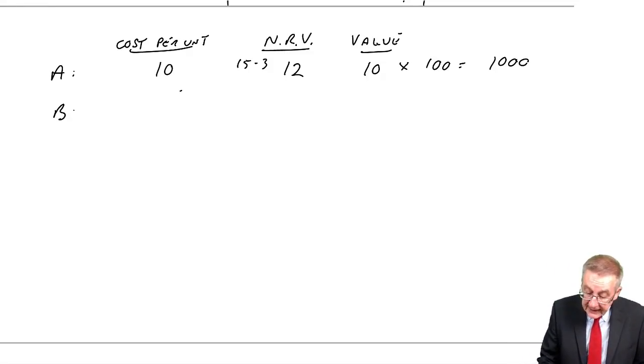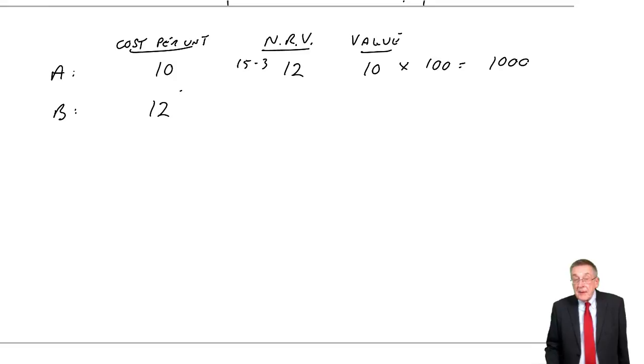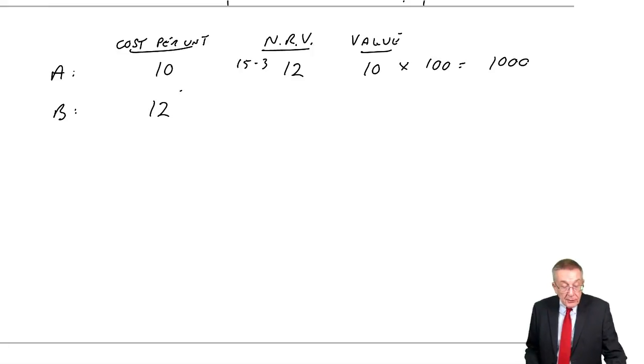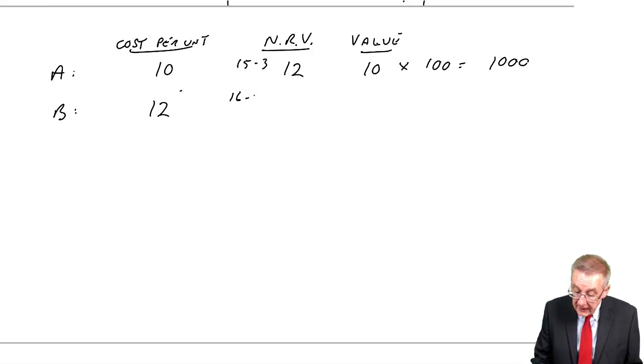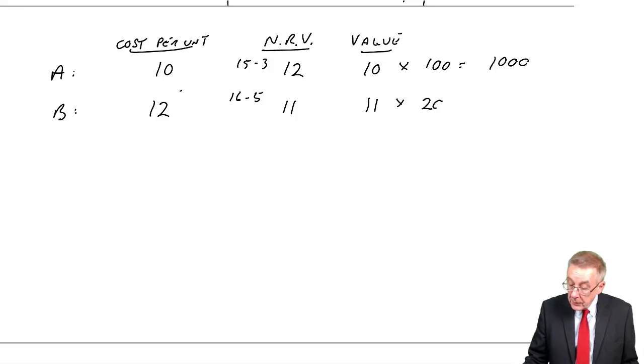they'd be valued at $1,000. What about B? So far, they've cost us $12. We're going to spend an extra $5, not spent yet, and then sell them for $16. So the net realizable value is 16 minus 5, which is $11. We have to value at the lower of the two, which would be $11. And how many units are there? 200, so $2,200.